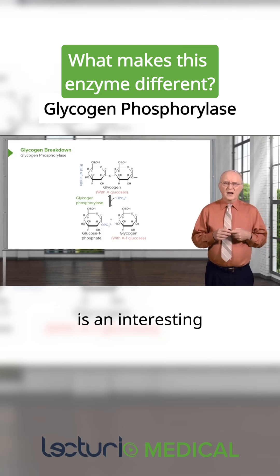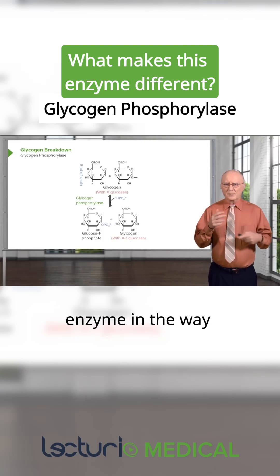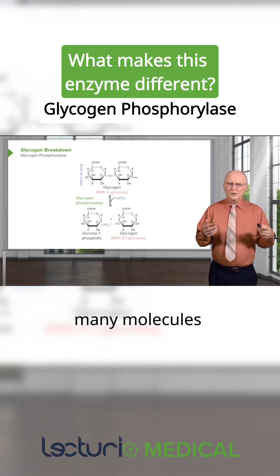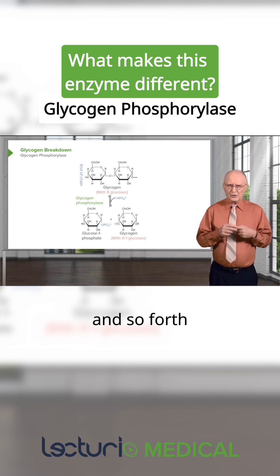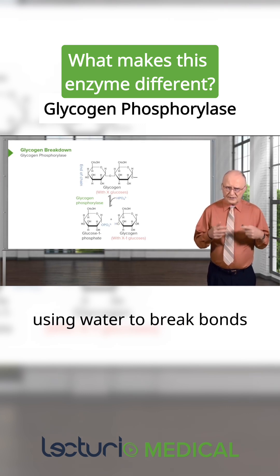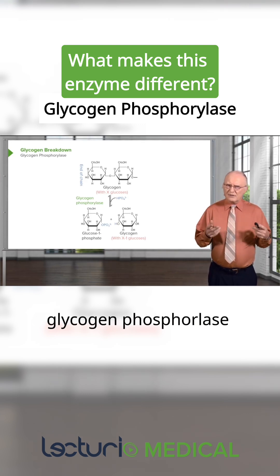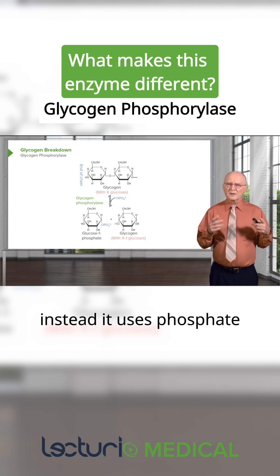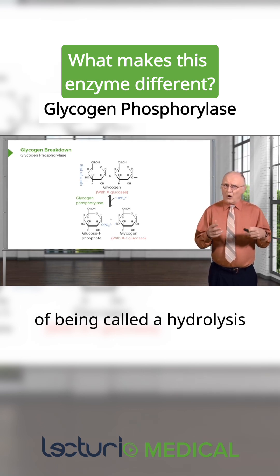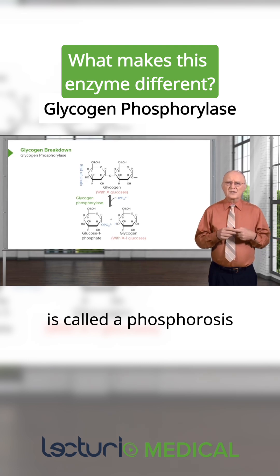Glycogen phosphorylase is an interesting enzyme in the way that it breaks glycogen down. Many molecules like sugars are broken down by hydrolysis, using water to break bonds. Glycogen phosphorylase does not use water — instead it uses phosphate, as you can see here. So this is called a phosphorolysis rather than a hydrolysis.